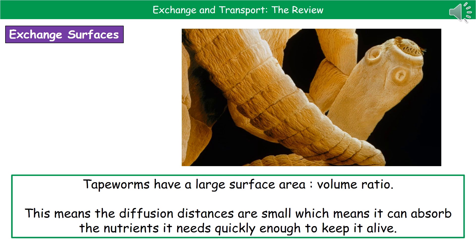In terms of where this is actually important, I've given you a zoomed-in image of a tapeworm — what you could get inside your intestines if you eat raw bacon or undercooked pork. Tapeworms have a really large surface area to volume ratio, and the whole reason behind that is so that diffusion distances are small, meaning they can absorb all the nutrients they need from your intestine in a short enough space of time to keep them alive.